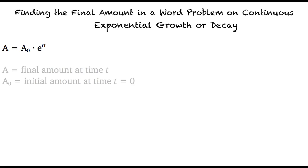A represents the final amount at time t. A sub zero represents the initial amount at time t equals zero. If the given problem describes exponential growth, A will be greater than A sub zero, and if the problem describes exponential decay, then A will be less than A sub zero.